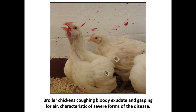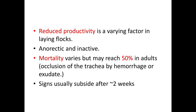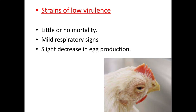Pump handle respiration is characteristic of the severe forms of ILT. Other important findings include reduced productivity in laying flocks, and affected birds are usually anorectic and inactive. The mouth and beak can be blood-stained from tracheal exudate, and mortality varies but can reach up to 50% in adults, mainly due to occlusion of the trachea by hemorrhagic exudate.